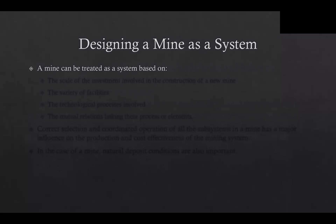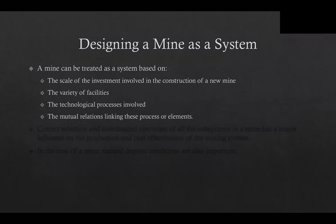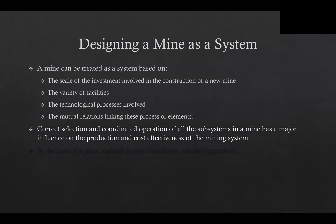The scale of the investment involved in the construction of a new mine, the variety of facilities, the technological processes involved, and the mutual relationships linking these processes or elements justify treating the mine as a system. Between the individual elements of the production in a mine, there are exact relationships and mutual feedback. Therefore, correct selection and coordinated operation of all these subsystems in a mine has a major influence on the production and cost effectiveness of the system.